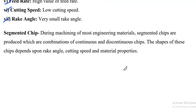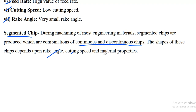The fourth type is the segmented chip. During machining of most engineering materials, segmented chips are produced due to a combination of continuous and discontinuous chip formation. The shape of these chips depends mainly on rake angle, cutting speed, and material properties. This covers all types of chip formation. I hope you have understood today's lecture content — in the next lecture we will discuss new topics. Thank you.